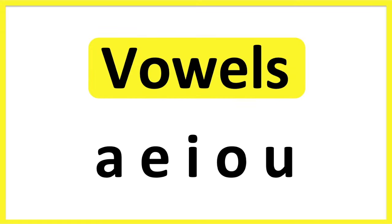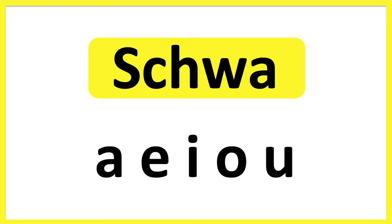The vowels in English are A, E, I, O and U. Each vowel has a schwa sound. This is the unstressed sound you hear in a word. You can think of it as a lazy vowel sound.